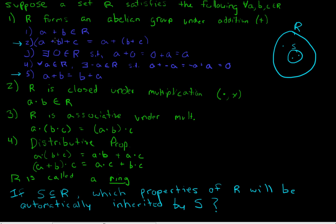Associativity, though, is a property of the operation addition. This doesn't really have anything to do with the elements of R — it's purely based on the binary operation chosen, which is addition. Addition is an associative operation, so any subset of R is also going to be associative because we're using the same operation.